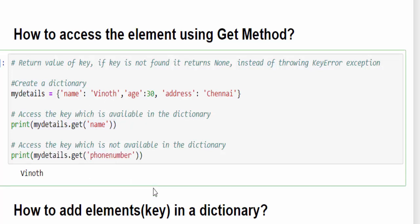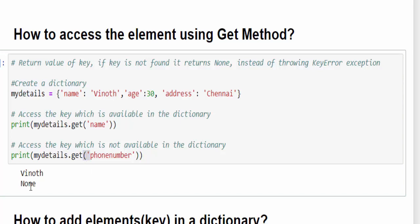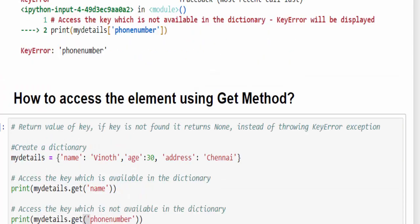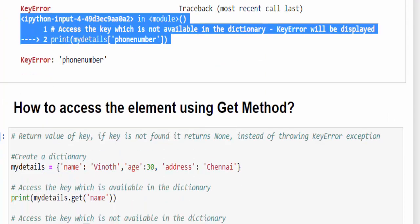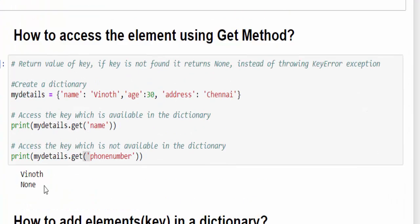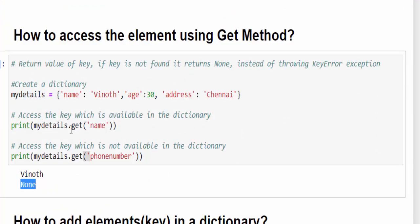Similarly, when you try to access the phone number which is not available in the dictionary, you will get the output as none. Just see the difference. Previous example, it's a key error. In this example, it is none. That's why I said try to always use get method when you want to access the keys.